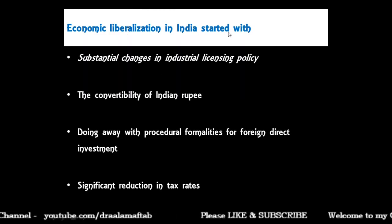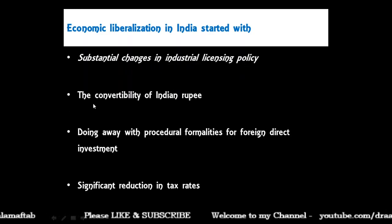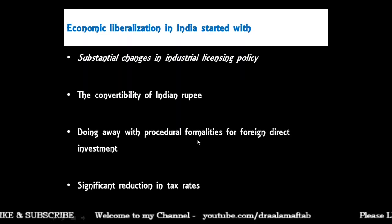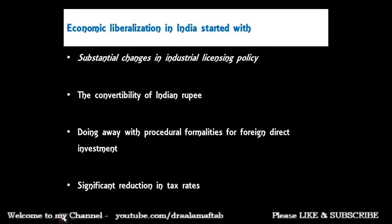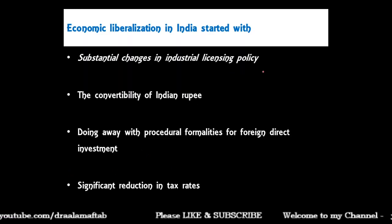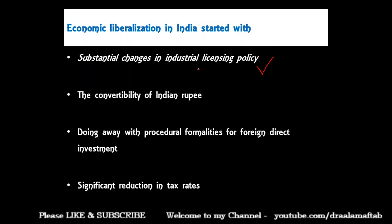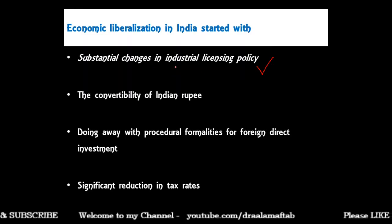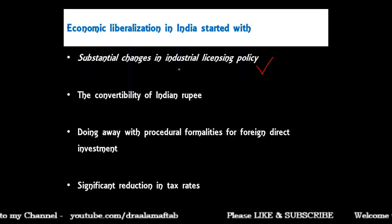Economic liberalization in India started with: substantial changes in industrial licensing policy; convertibility of the Indian rupee; doing away with procedural formalities for foreign direct investment; or significant reduction in tax rates. The correct answer is substantial changes in industrial licensing policy — the first and foremost important change was in de-licensing, that is, change in the licensing procedure.